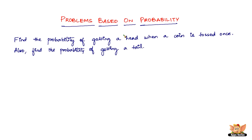What is probability? Probability is nothing but the chances of getting something that you want — the chance of getting something out of the real possibilities that exist. Now, the probability of getting a head when a coin is tossed once: a coin has a head and a tail, so when you toss it once you either get a head or a tail. The chances of getting a head or a tail is one out of two.